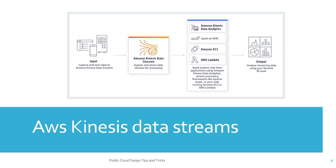AWS Kinesis Data Streams is a scalable and durable real time data streaming service that can continuously capture gigabytes of data per second from hundreds of thousands of sources. As you can see in this diagram, input sources capture and send data to Amazon Kinesis Data Streams, which ingests and stores all these data streams for processing. You can then build custom real time applications using Amazon Kinesis Data Analytics, stream processing frameworks like Apache Spark, code running on Amazon EC2 or AWS Lambda, and visualize results via Power BI.